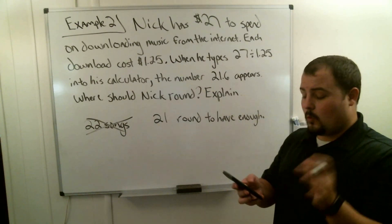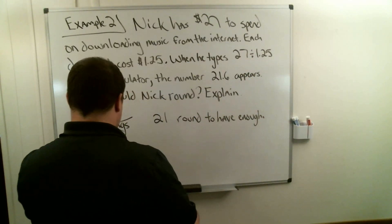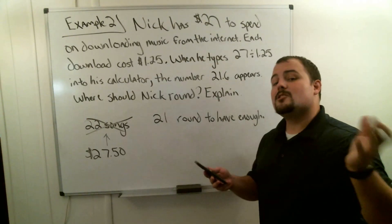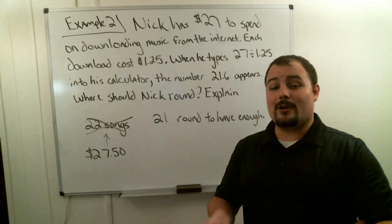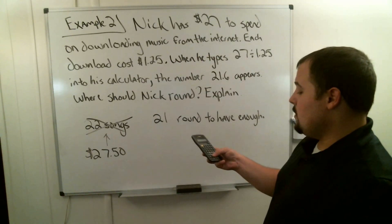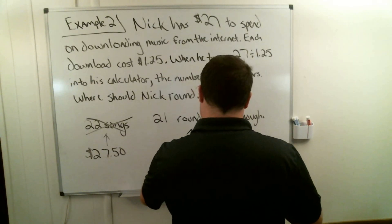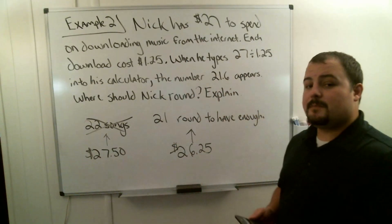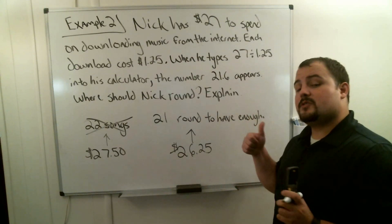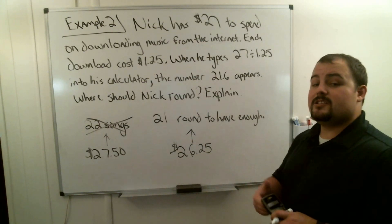Let me show you why he must round down. If we take 22 times $1.25, that means downloading 22 songs would cost $27.50 — but he only has $27. We can't just add 50 cents and say he can download 22 songs. If he stays within his $27 budget, he can download 21 songs: 21 times $1.25 equals $26.25, which means he has enough money for 21 songs and still stays within budget. Sometimes we don't round up even if the decimal is five or more — it all depends on the situation.